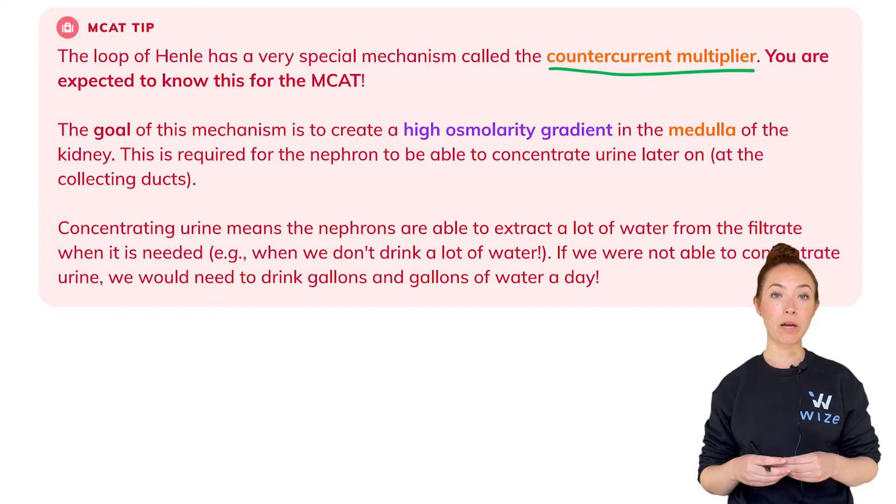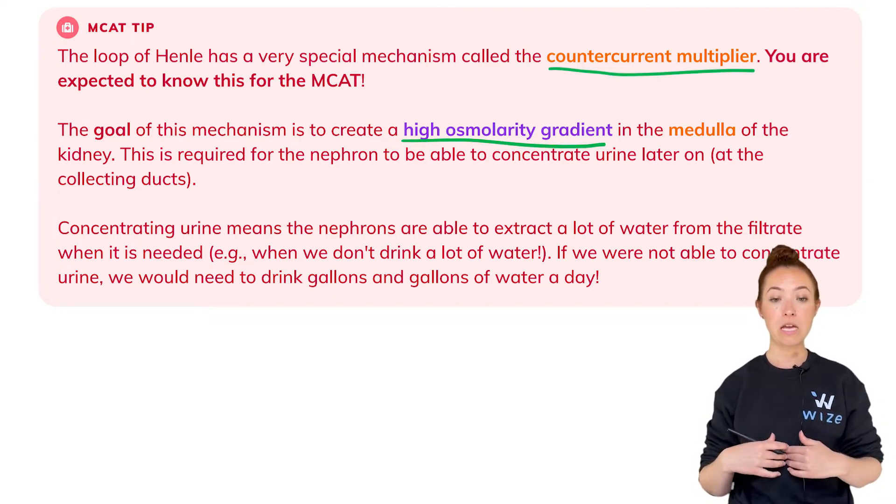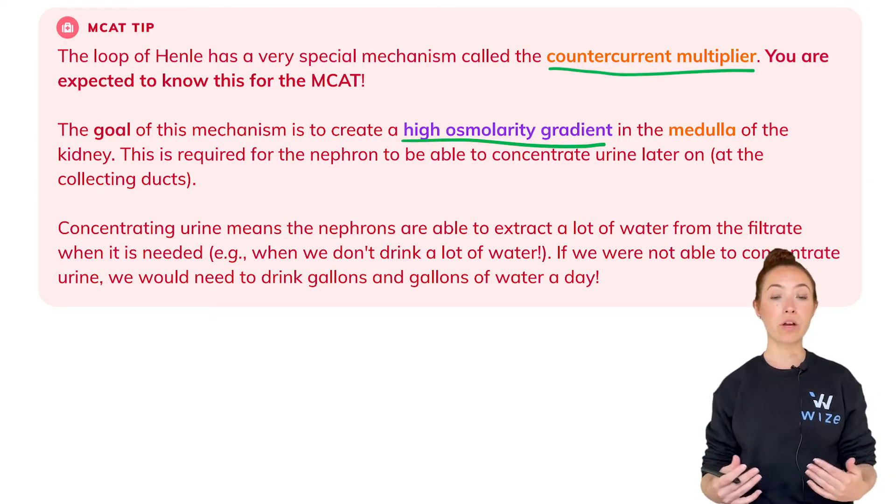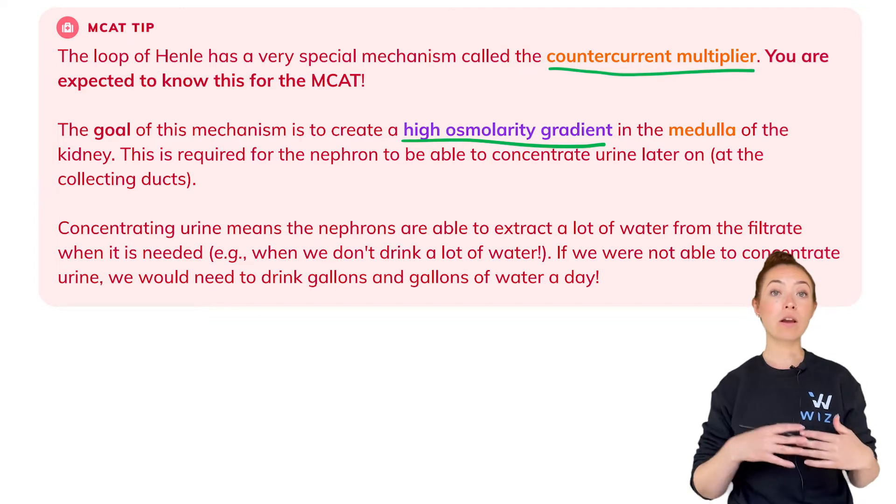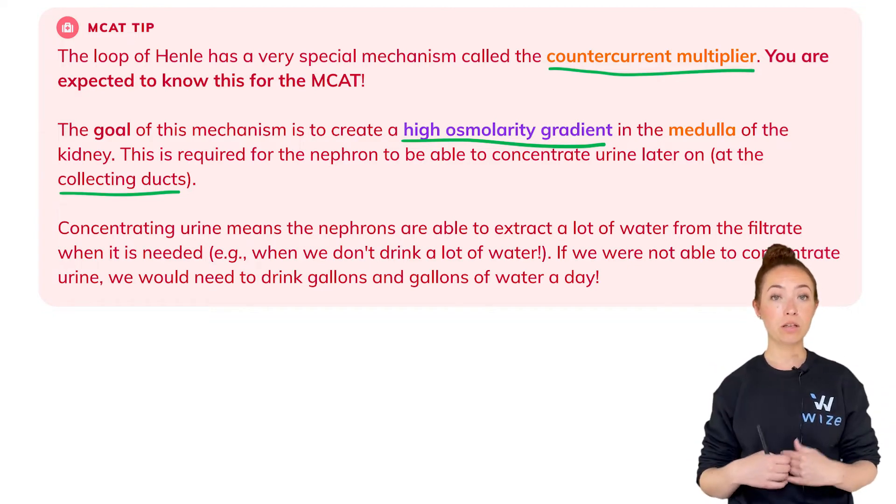The counter current multiplier is a mechanism that creates a high osmolarity gradient in the medulla of the nephron, and this is required so that the nephron later on, especially at the collecting ducts, can actually concentrate urine.